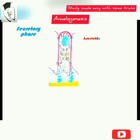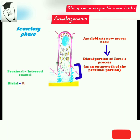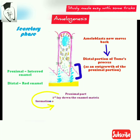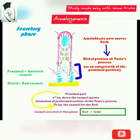In the secretory phase, ameloblasts move back and develop the distal portion of Tomes' process as an outgrowth of the proximal portion. The proximal portion of Tomes' process forms the interrod enamel, and the distal portion forms the rod enamel. The proximal portion first lays down the enamel matrix, forming pre-formed cavities of Tomes' process, after which Tomes' process lays the enamel matrix for the rod. Enamel secreted in this phase has both rod and interrod enamel.